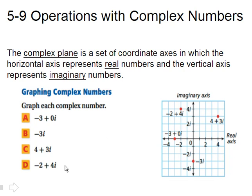And negative 2 plus 4i. We go back 2 on the real and up 4 on the imaginary. And that would be right there. So that's how you graph complex numbers.